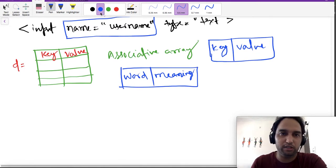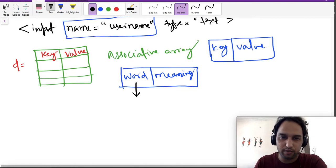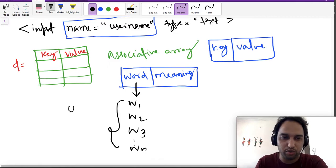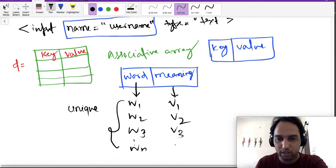One property that you must have noticed is that words like W1, W2, W3, up to Wn - you must have noticed that all these words are unique. And let us suppose there are some values attached to them, V2, V3, V4, up to Vn. You must have noticed that there is no guarantee that these values are unique.